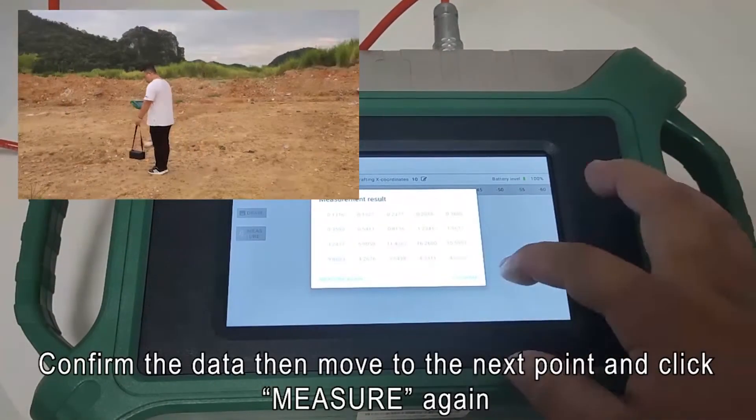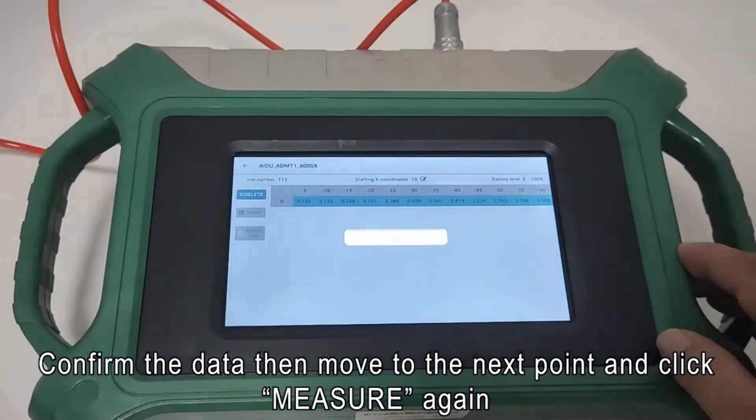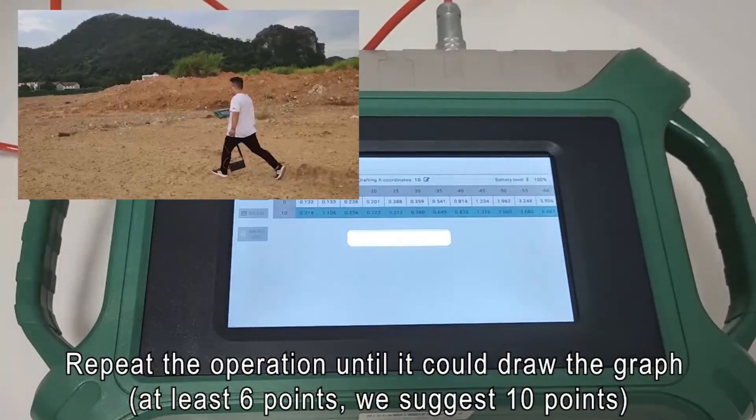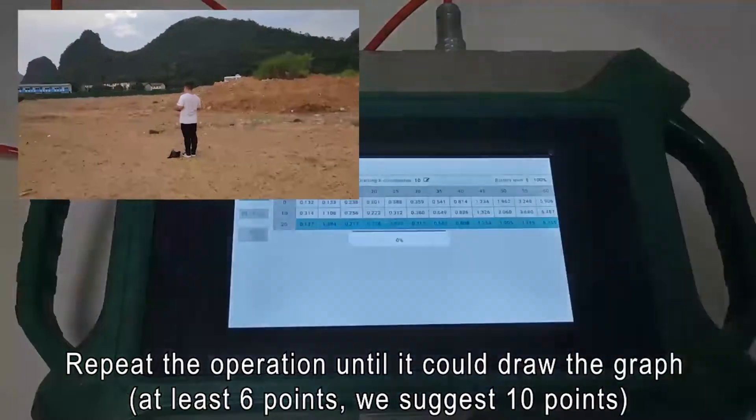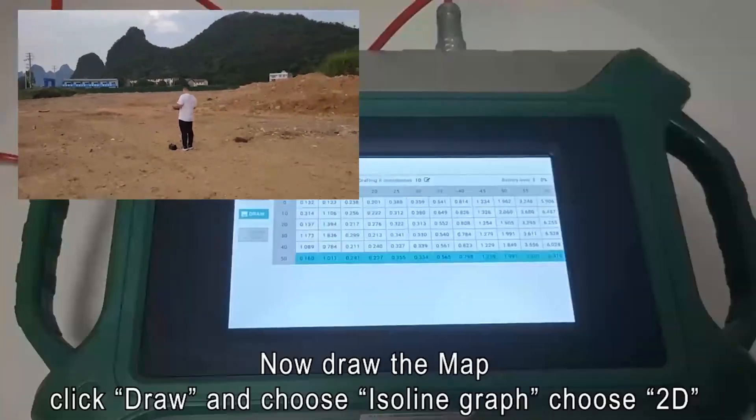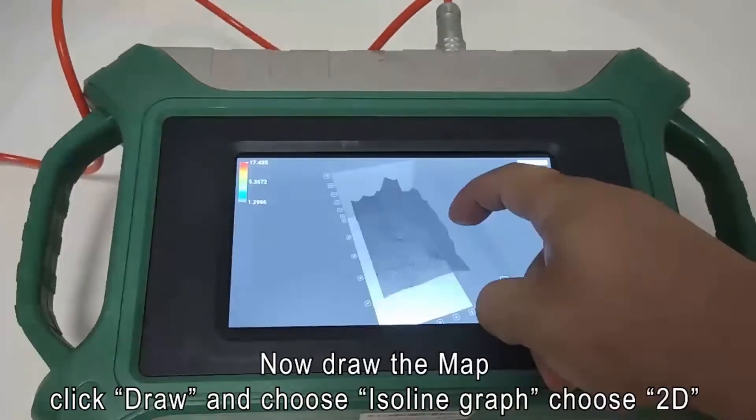Confirm the data then move to the next point and click measure again. Repeat the operation until it could draw the graph. At least 6 points. We suggest 10 points. Now draw the map. Click draw and choose Isoline graph.